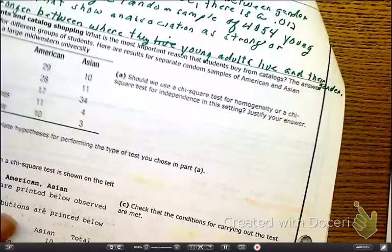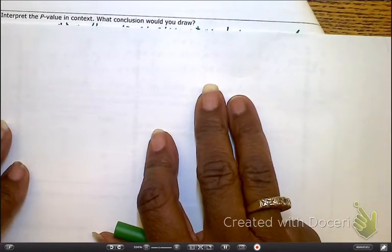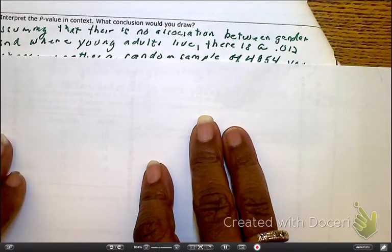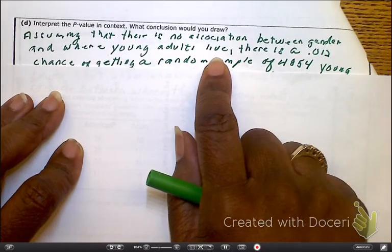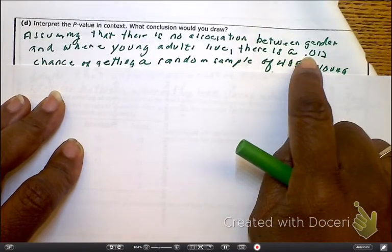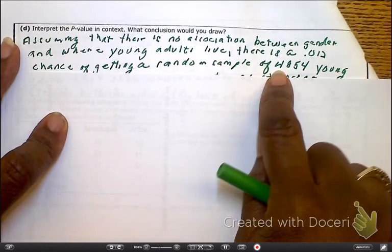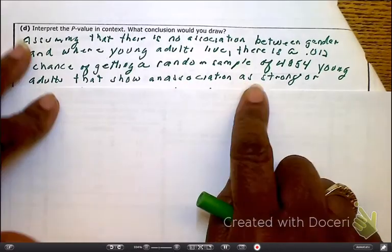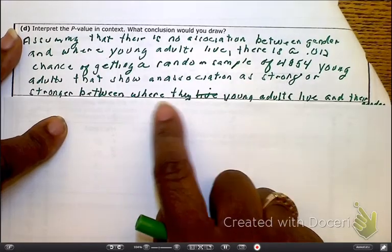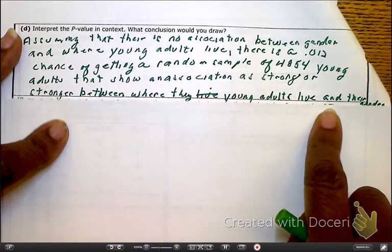Now, as I go to the next page, the next page is saying we need to interpret the p-value. Oh, here we go for the interpretation. And then they want us to do a conclusion. So interpreting. So assuming that H0 is true, we're assuming that there is no association between the gender and where young adults live. There is, and there's your p-value, a 0.012 chance of getting a random sample of, that's the number of people that we sampled, adults, young adults, that show an association as strong or stronger between where they, where the young, where the young people live and their gender.